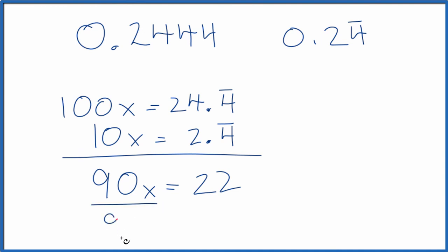Now we divide both sides by 90. And we have our fraction. x equals 22 90ths. We could reduce this down to 11 45ths. And we're done.